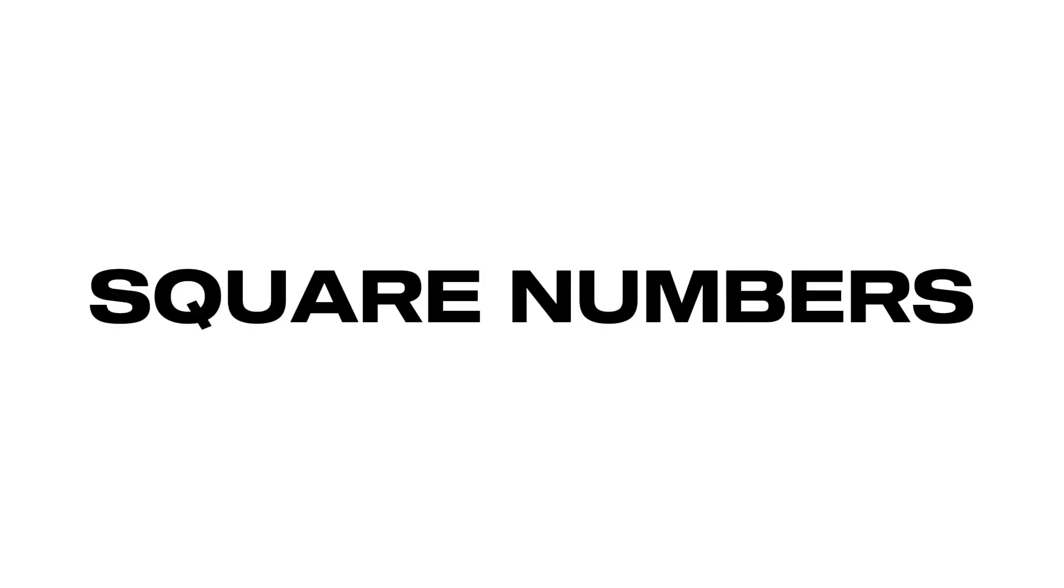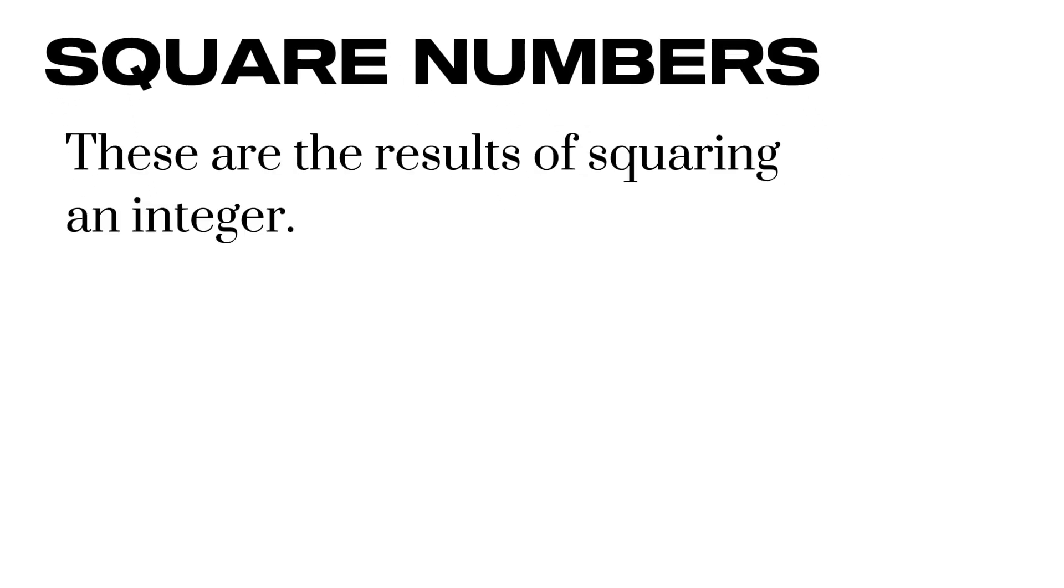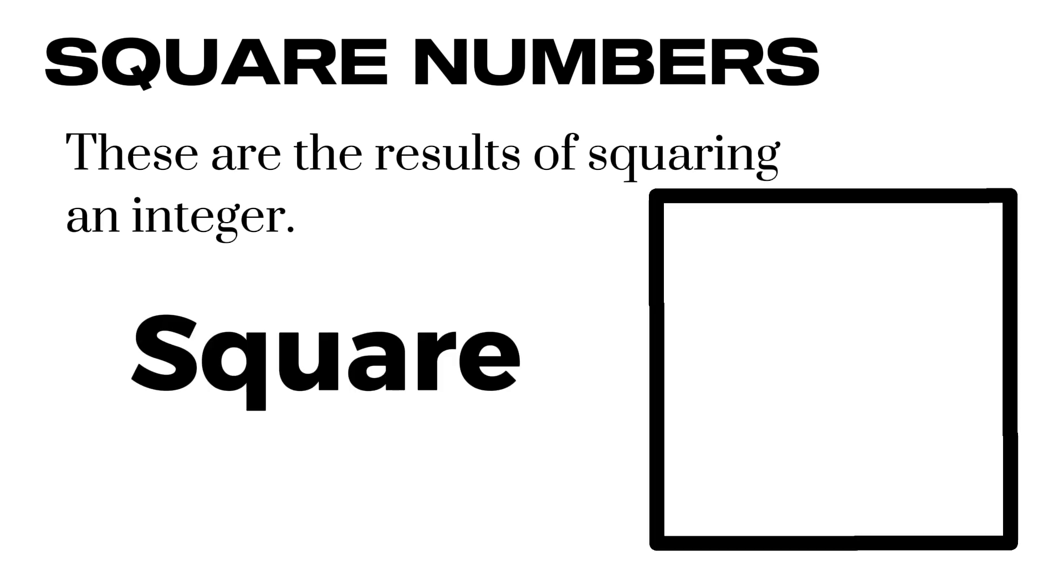There are also square numbers. We all know what square numbers are. These are the result of squaring an integer. But square numbers are also figurate numbers. They are called square numbers since they can be represented as a perfect square using dots.